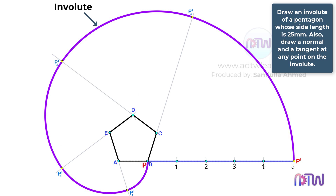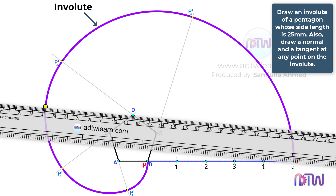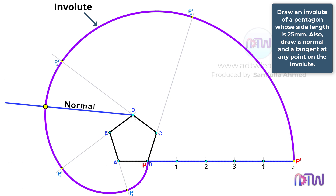After this, we need to draw a tangent and a normal at any point on this curve. Suppose we want to draw a tangent and a normal at this point. Take a ruler and, using this point as a reference, draw a line up to point D. This line will be the normal at this point. After this, draw a perpendicular line to this line, which will be the tangent to this curve.